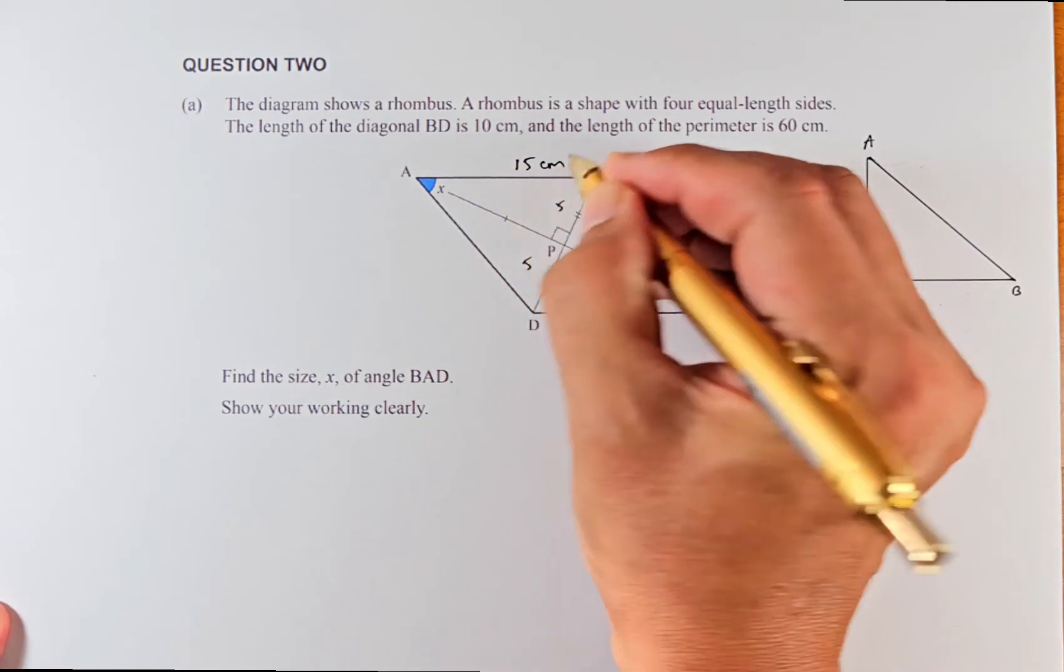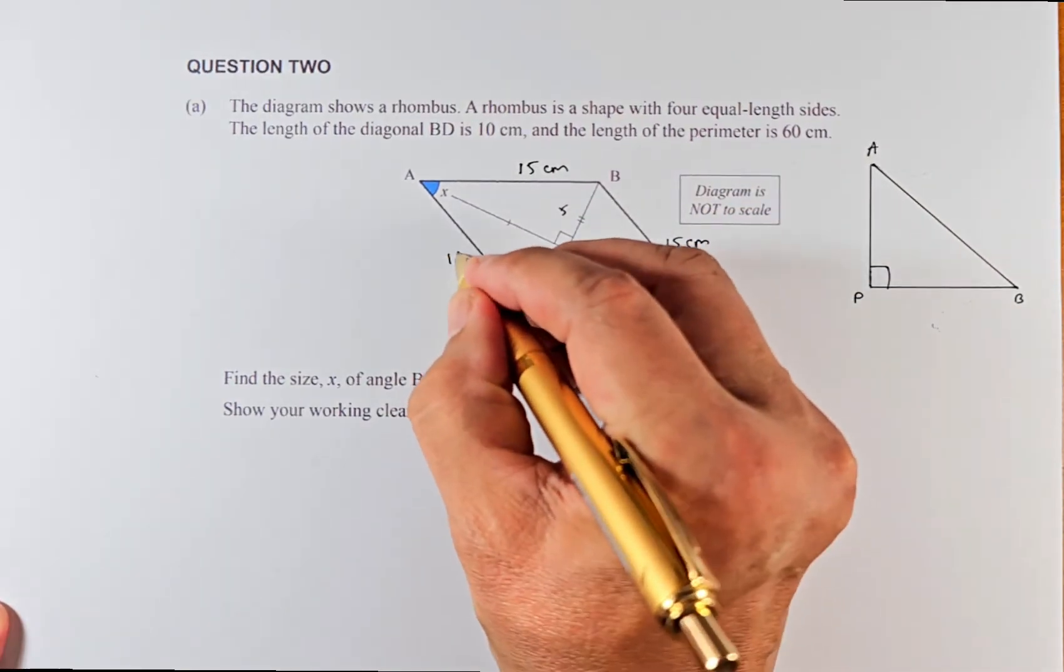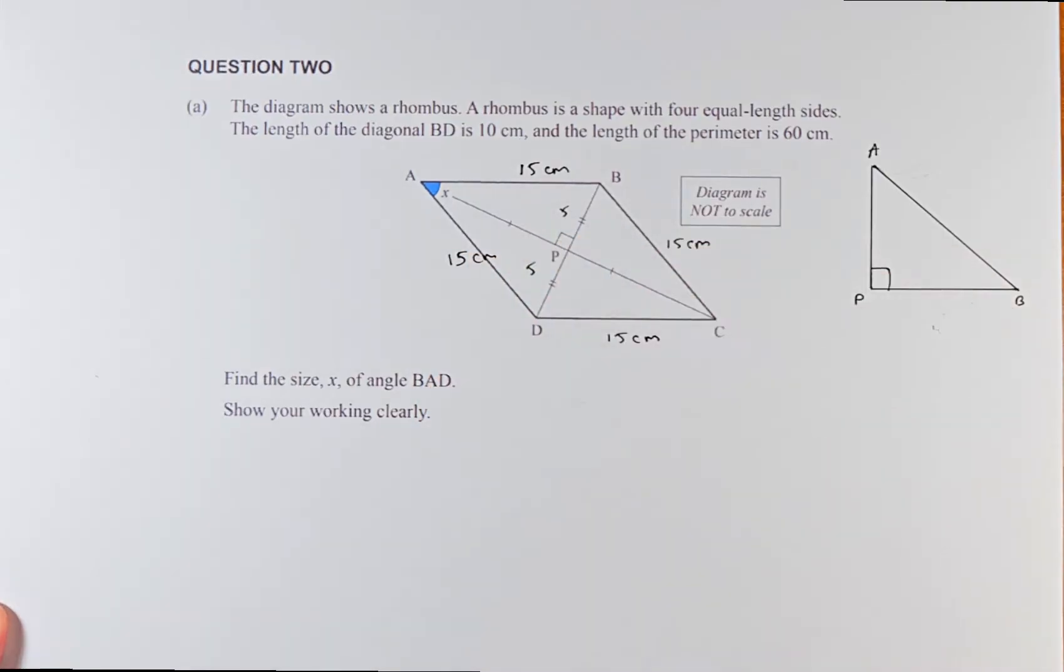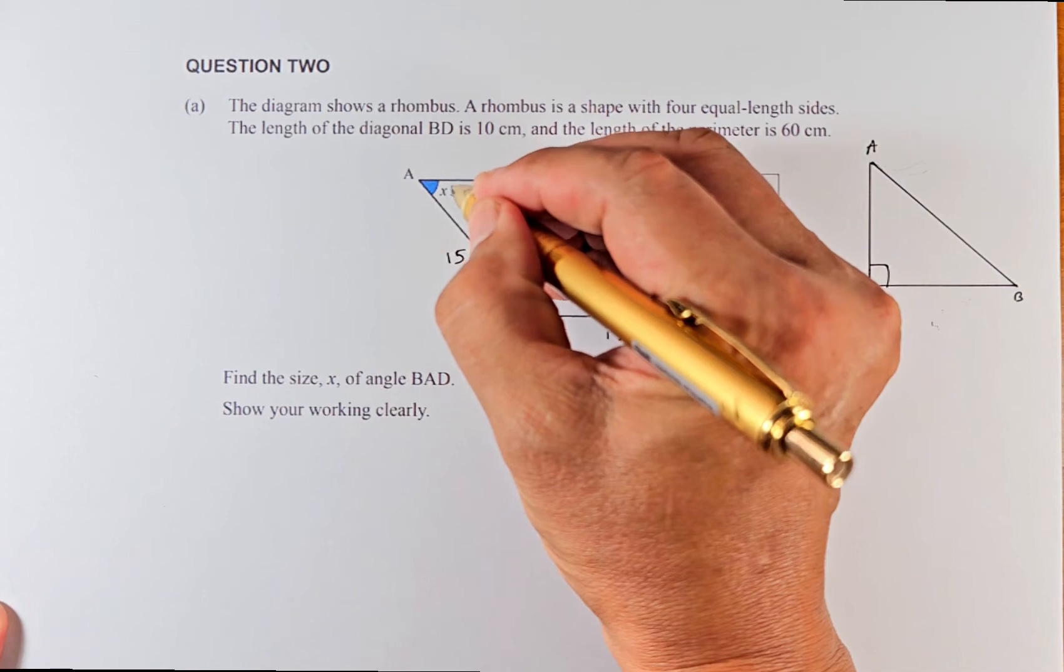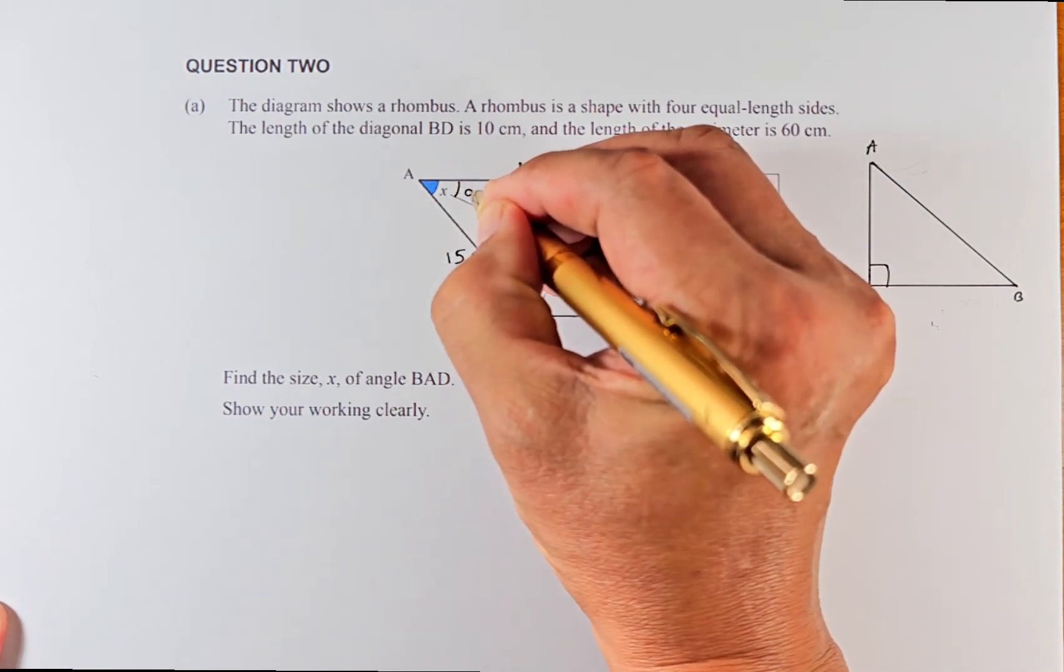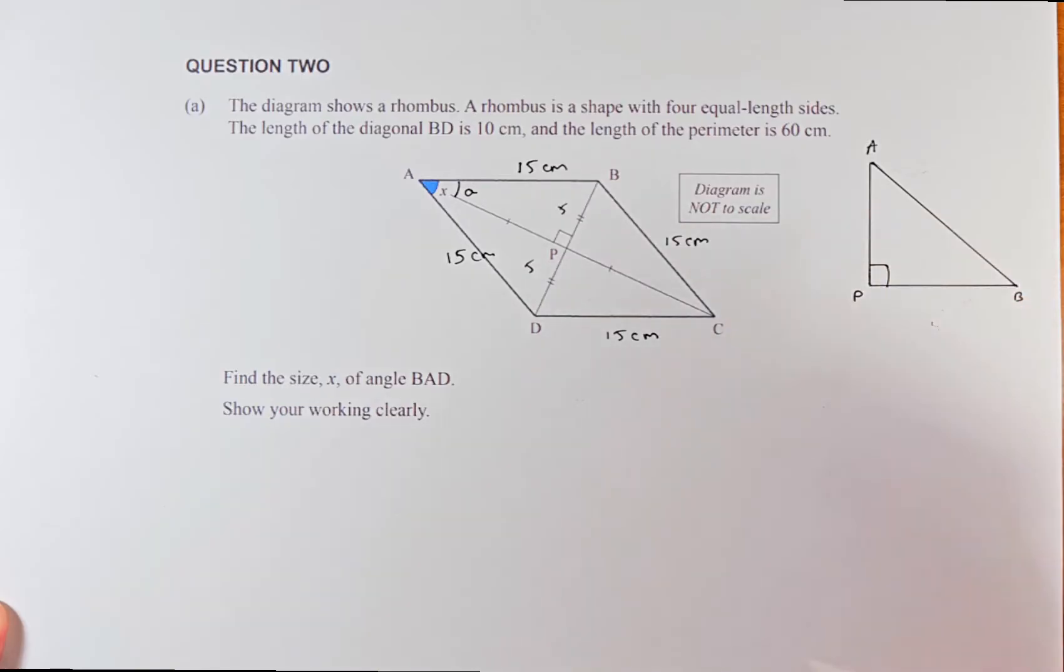15 times 4 is going to be 60 cm. From there we are going to solve for this angle x. We're going to let half of x be a. We're going to transfer this triangle APB into here, so this is a right angle.